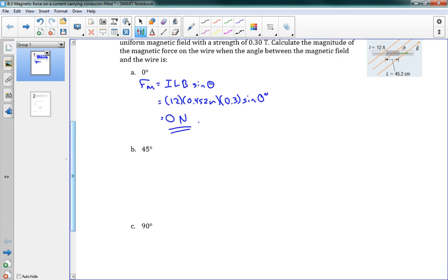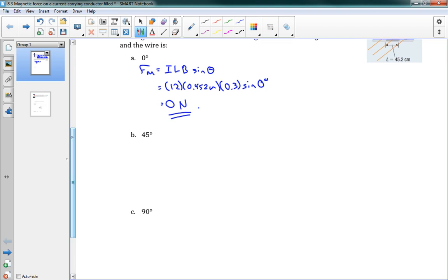And so that makes sense. Any time that you have a wire in this case that's running parallel to your field, it won't experience any force. Just like our charge that was moving parallel to the field. Alright, now we have 45 degrees, so we'll put in the exact same thing here. We've got our numbers. 0.452. 0.3. The only thing that's changed here is our angle sine, 45 degrees. And you can go ahead and calculate that. You will get 1.2 newtons.